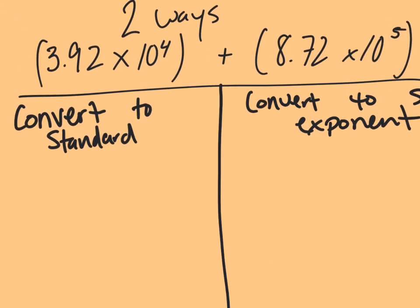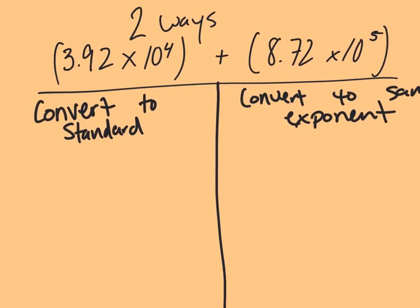We have a problem at the very beginning. We're taking two scientific notations that we're adding together: 3.92 times 10 to the fourth, and I'm adding that to 8.72 times 10 to the fifth. We can't just add the exponents together, and we can't just add the numbers together, because we're taking this decimal and moving it four spaces to the right. We're getting into some massive numbers and sometimes all the place values don't line up. So let's dive in before I get too far.